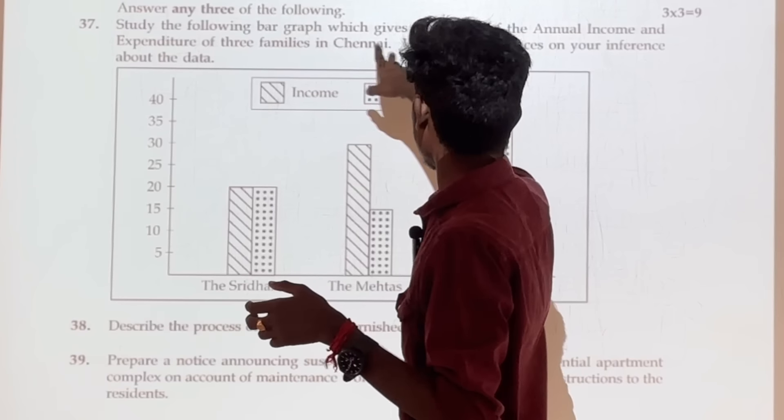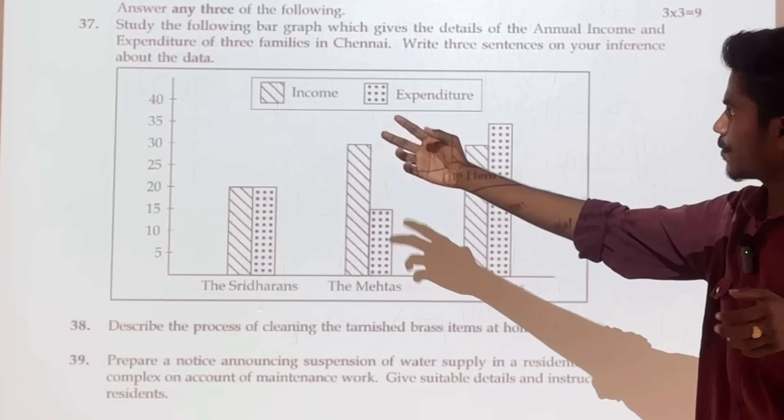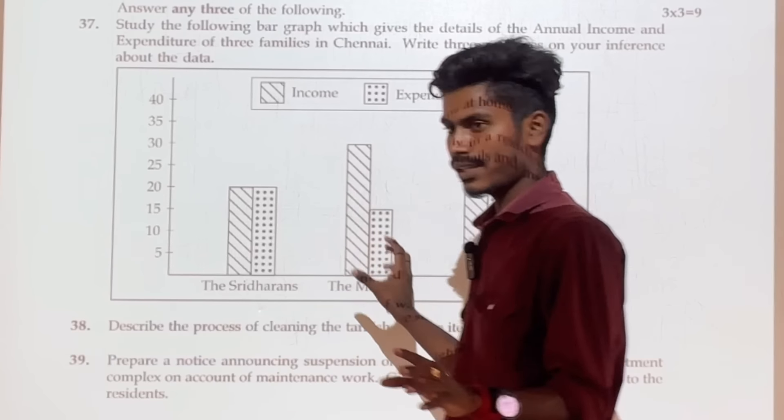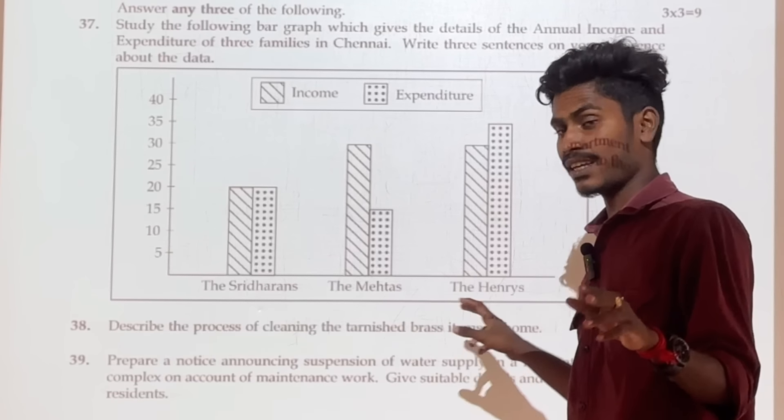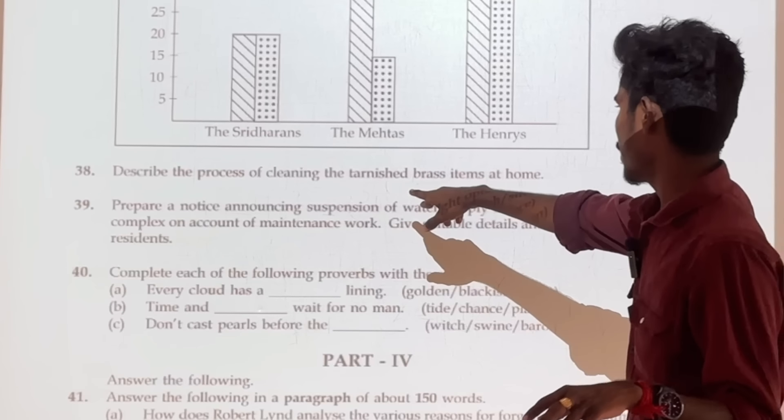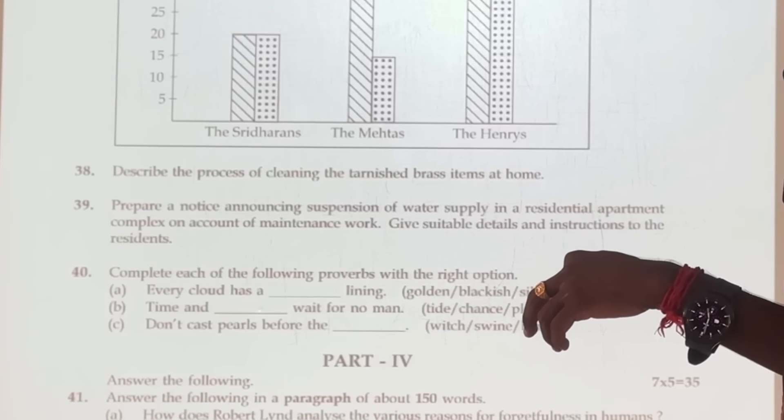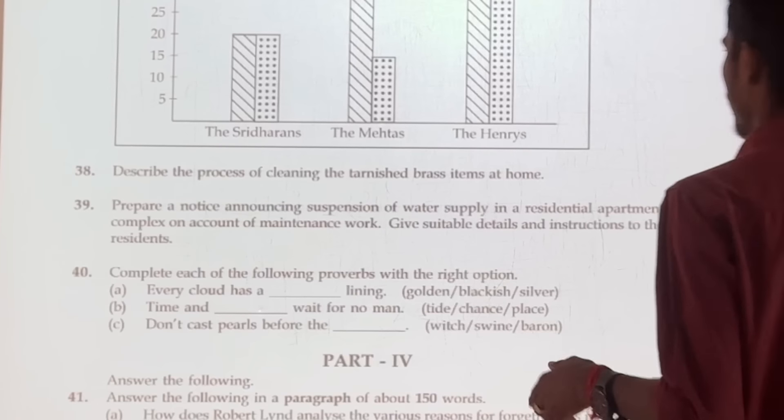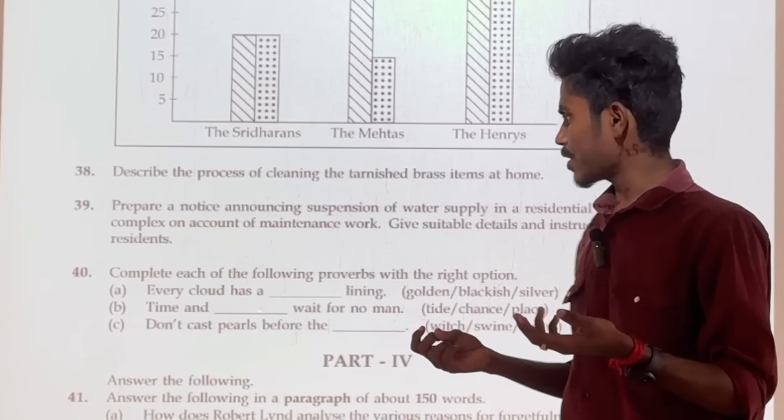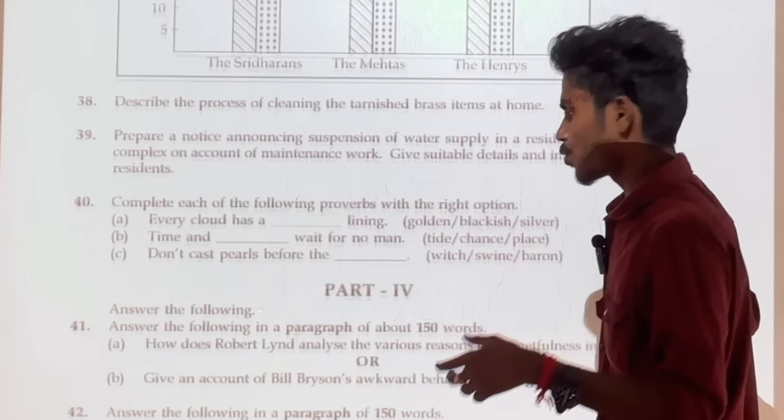Study the following graph. If you look at the three meaningful sentences, if you look at the government answer, this is the correct three sentences meaningful with mistakes, you can tell three sentences. So I will tell you three points. The process of cleaning tarnished brass items at home, that is the process, tea process, mango juice, that is the process. The process of cleaning, order-wise, that is the full mark.